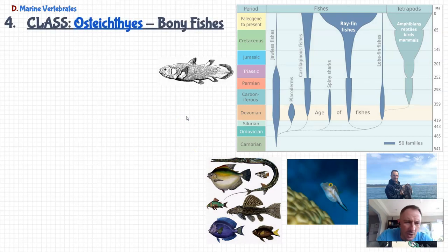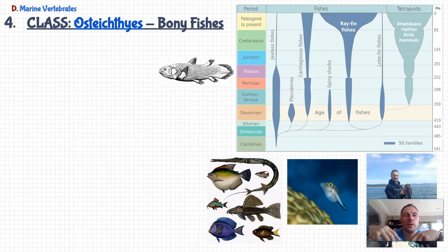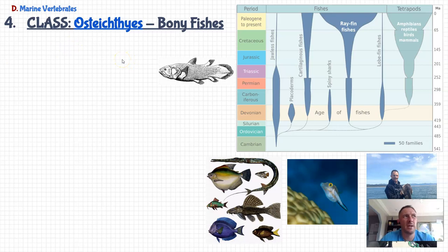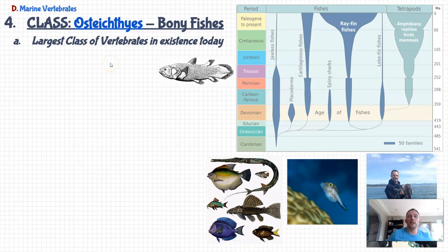So again, classification. We're talking about the animal kingdom, and then the vertebrate phylum. Within that vertebrate phylum there are a number of different classes. We had agnatha as a class, chondrichthyes as a class — the cartilaginous fish. And now we have osteichthyes, meaning the bony fish. Osteo referring to bones, chondro referring to cartilage in the chondrichthyes. There are basically three classes of fish, and this is the largest one — the largest class of vertebrate in existence today. Bony fish outnumber every other type of vertebrate, including mammals, reptiles, birds, and amphibians.